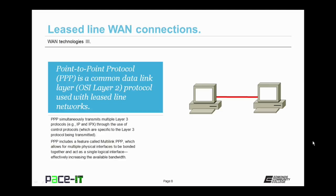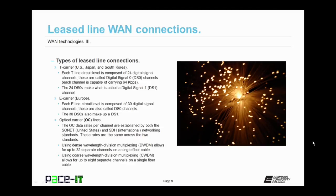PPP can include a feature called Multilink PPP, which allows for multiple physical interfaces to be bonded together and act as a single logical interface. This effectively increases the available bandwidth to that system. There are different types of leased line connections.